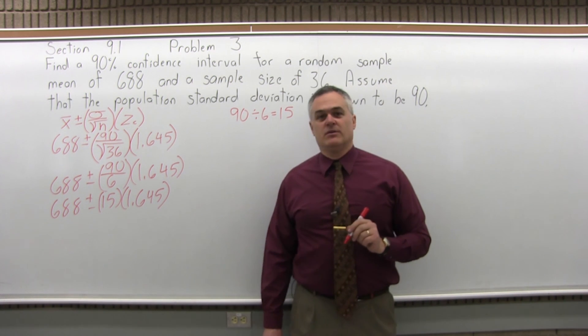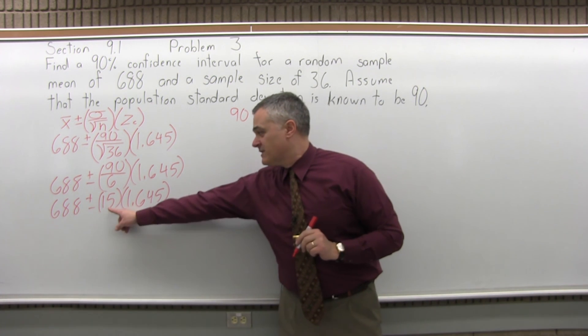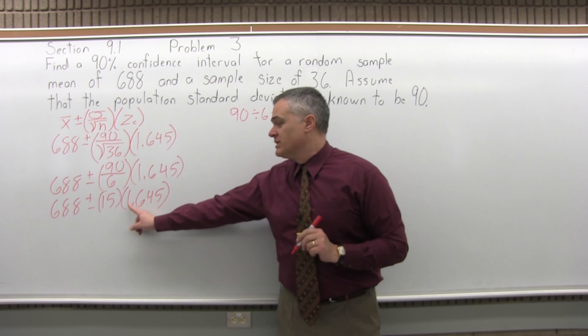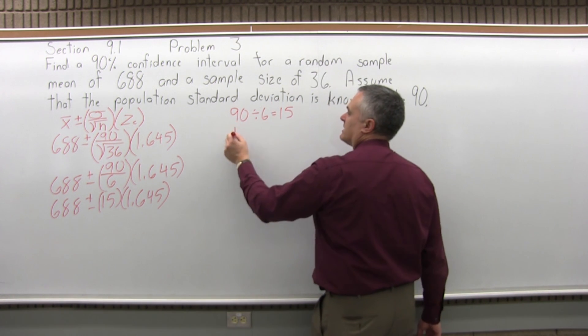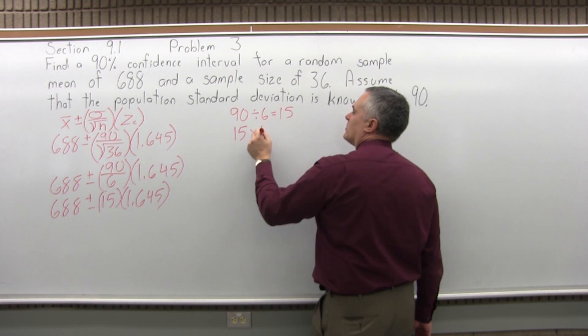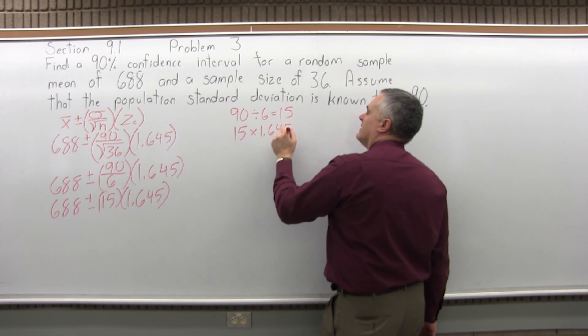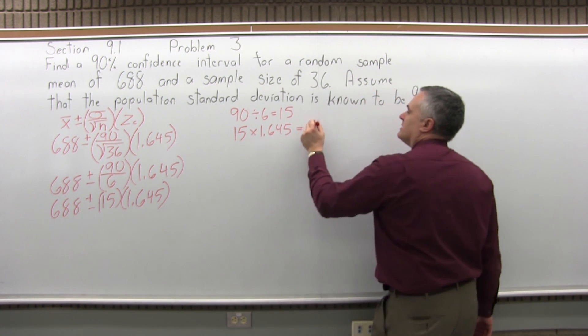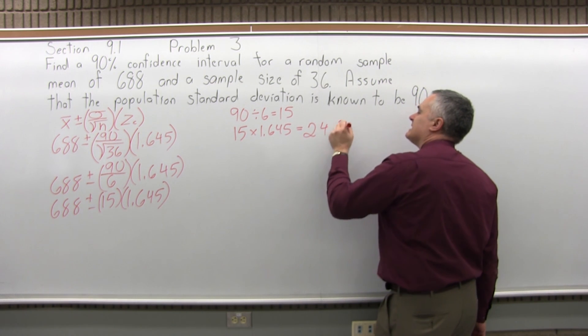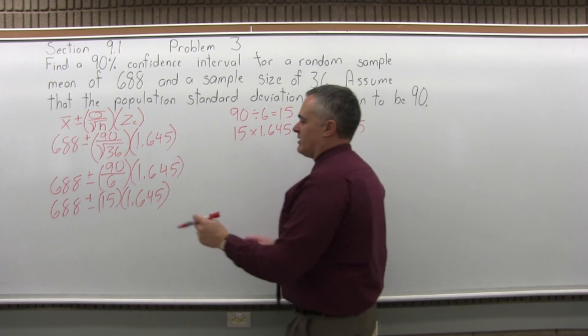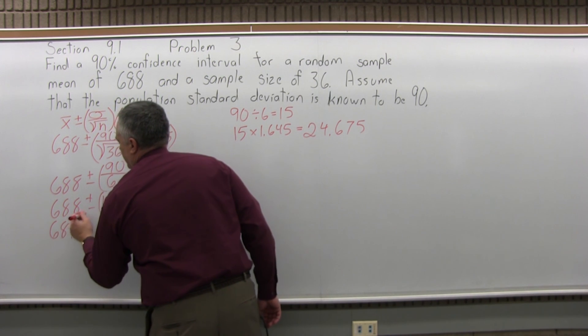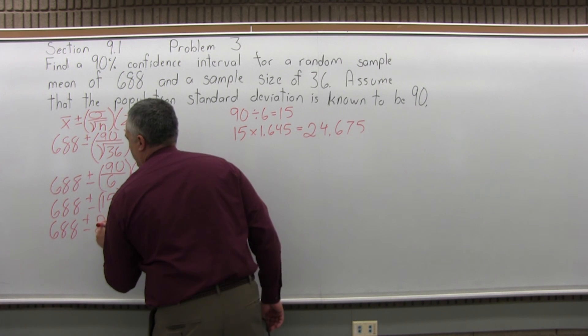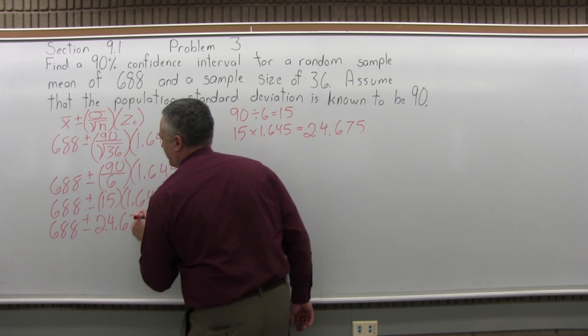So 90 divided by 6 is 15. So I can go 688 plus or minus 15 times 1.645. Now at this point, the next thing that you would do is 15 times 1.645. That's also something you'd probably want to do with the calculator. So off to the side, you can go 15 times 1.645. And the calculator will tell you that it is 24.675. That's the result you get.